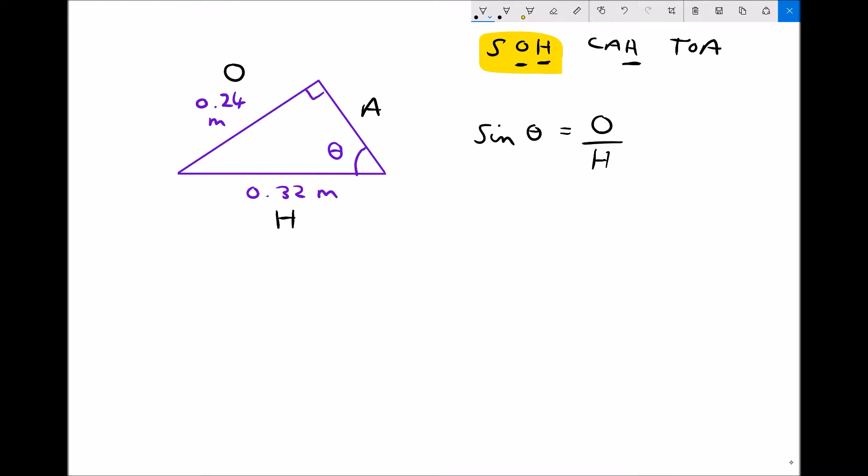Therefore, what we're going to need to do is sine to the minus 1 of each side, the inverse sine. Well, if we do sine to the minus 1 of the left-hand side, sine to the minus 1 of sine cancels itself out. It's the inverse function. So we'll just be left with theta.